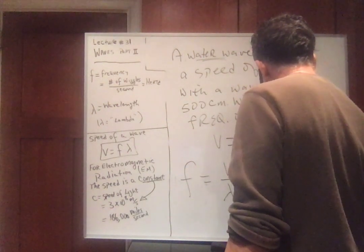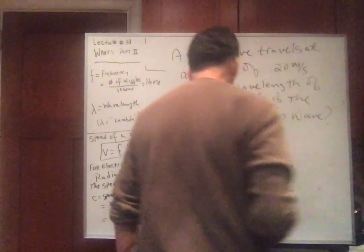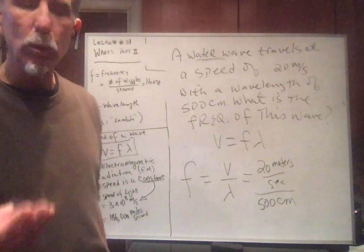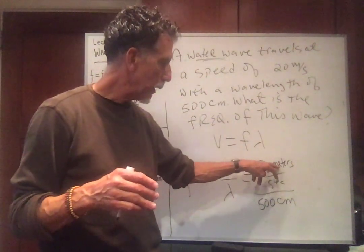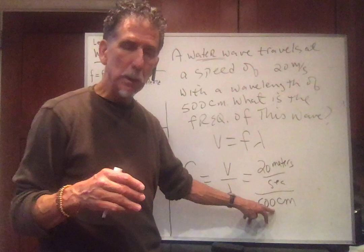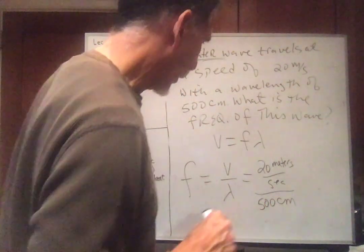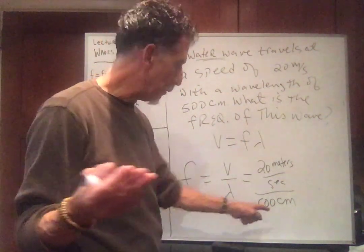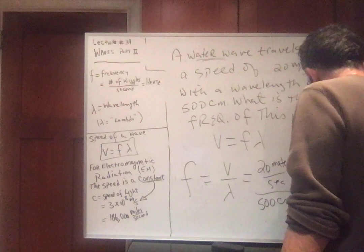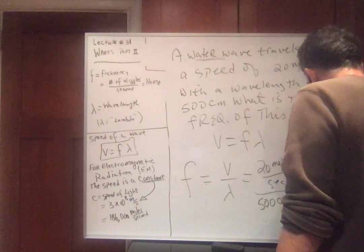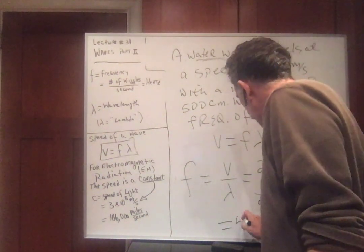It's equal to 20 meters per second, divided by 500 centimeters. Now, look, this is frequency. So the units had better be one over a time. So the units of length need to cancel. So I could either make meters into centimeters or centimeters into meters because I want these units to cancel. Well, 500 centimeters is five meters, isn't it? 100 centimeters is one meter. So 500 centimeters is five meters. So this is the same as 20 meters per second divided by five meters.